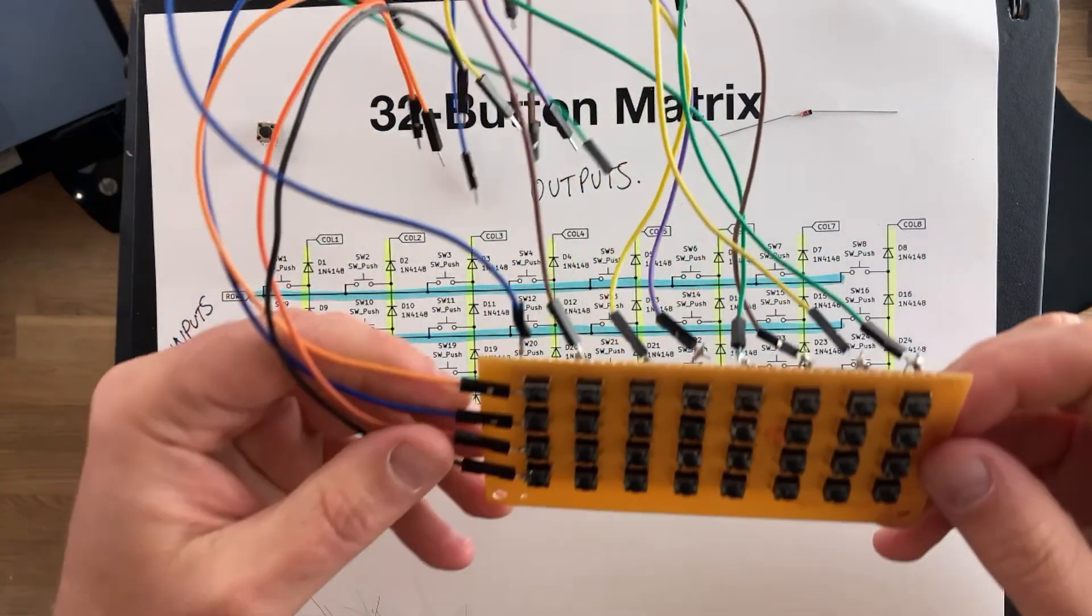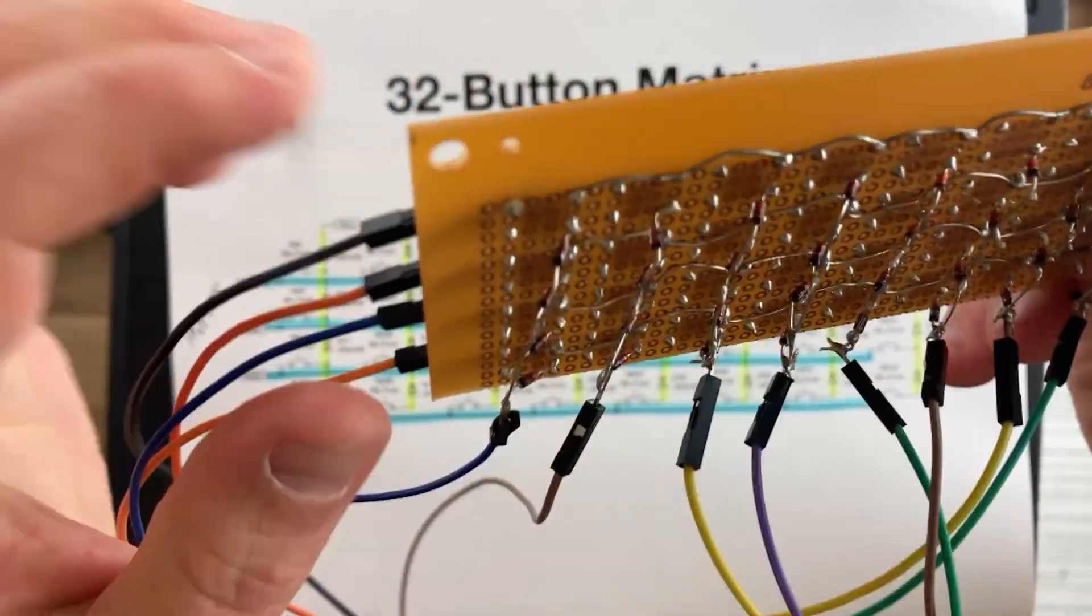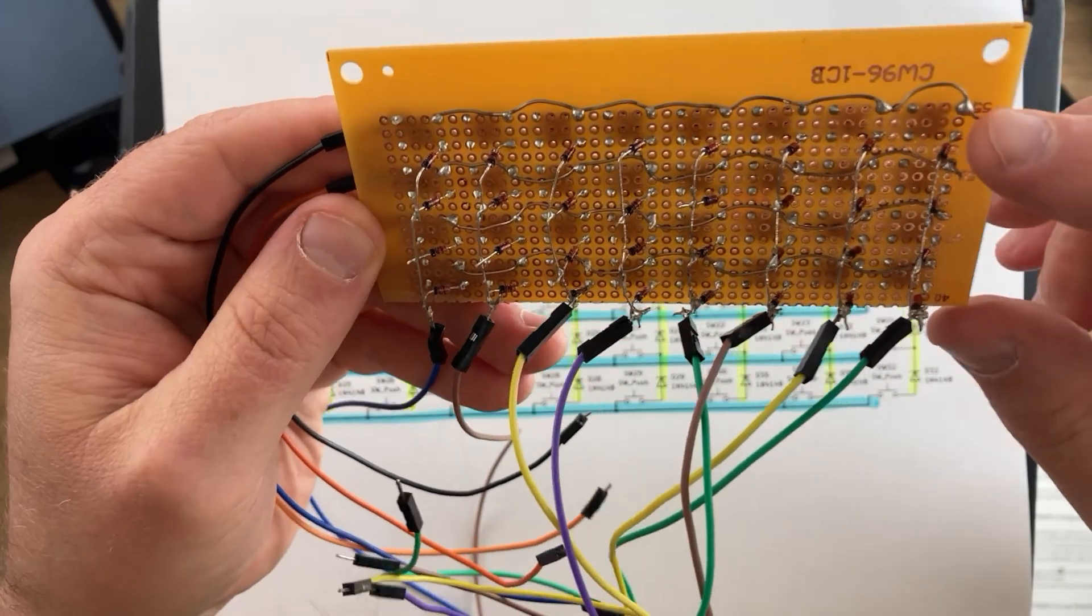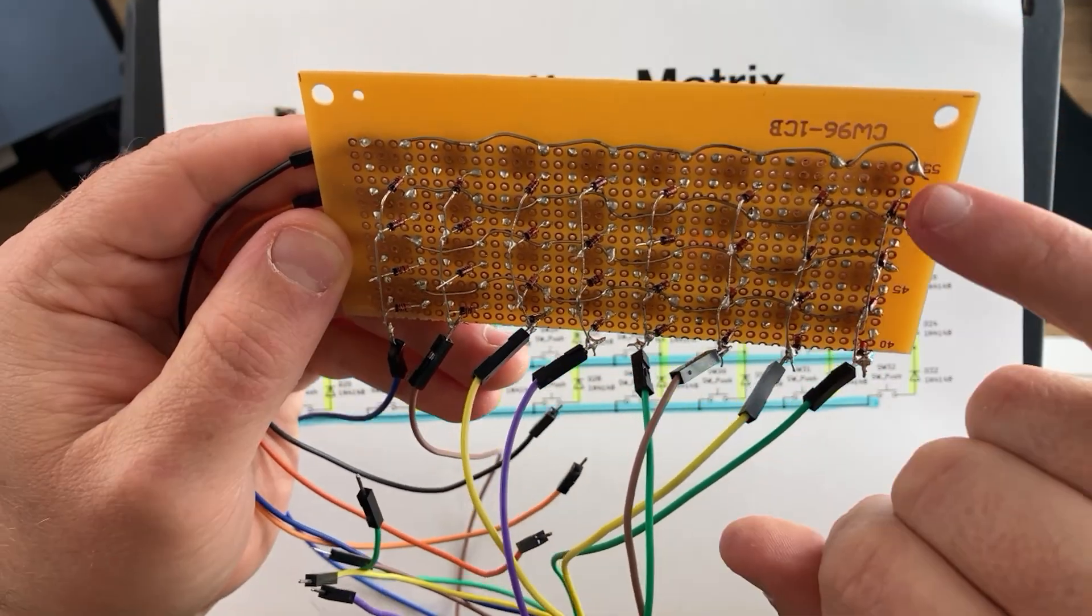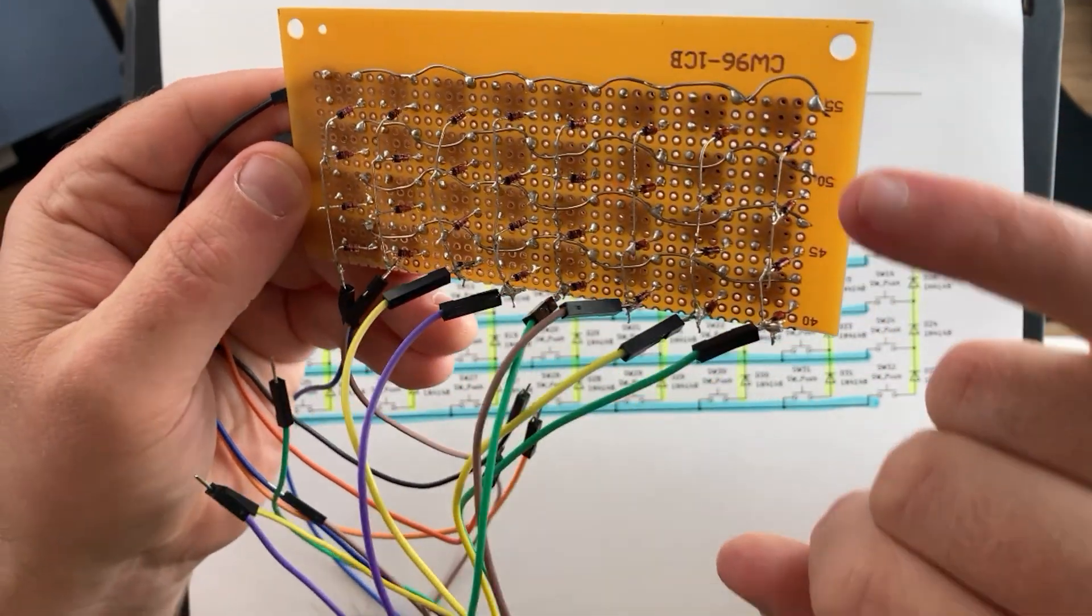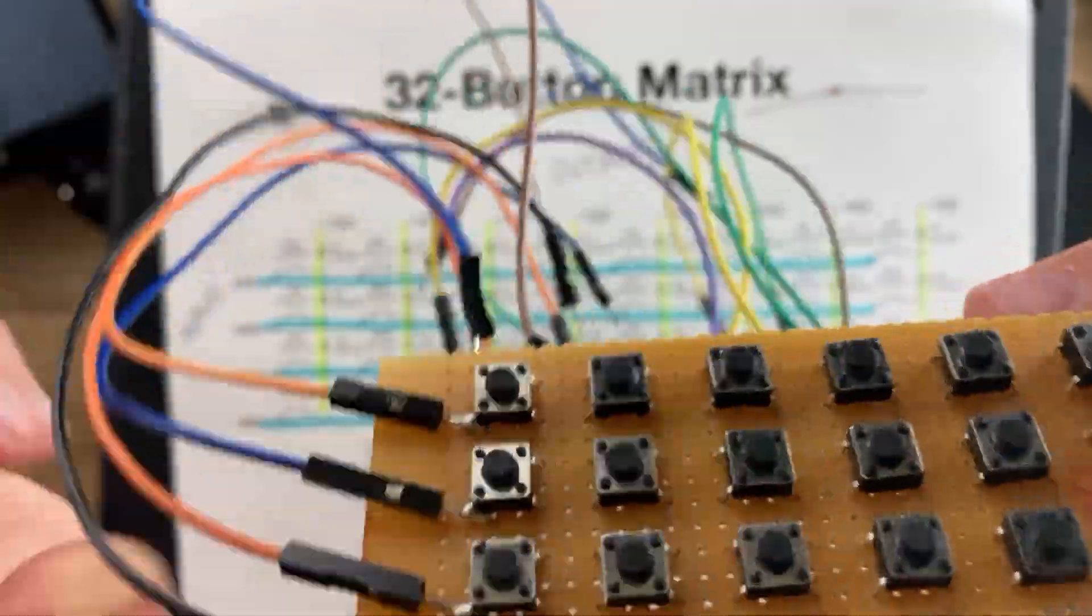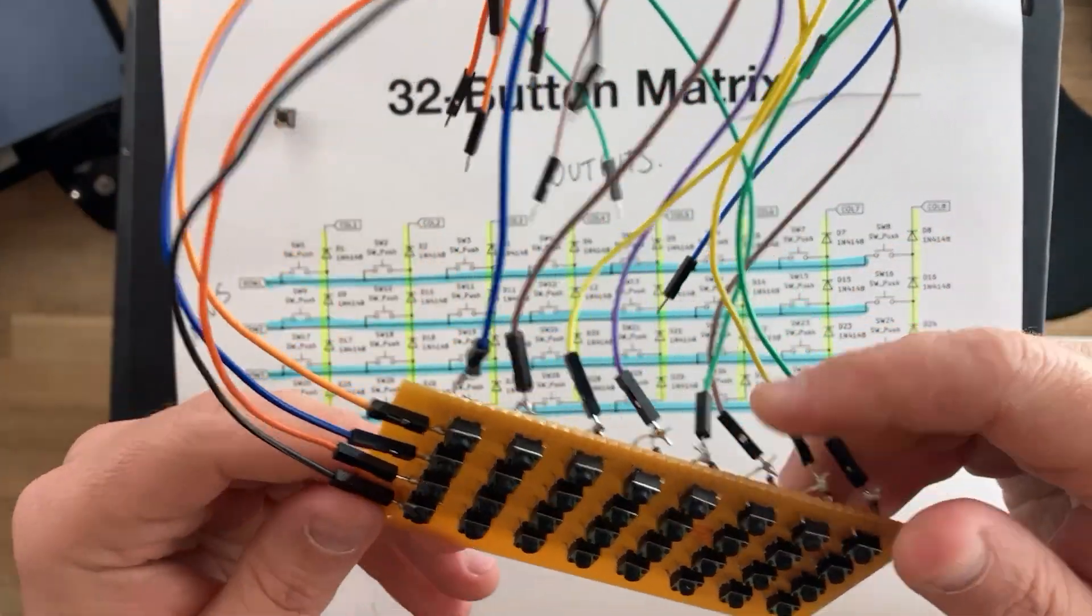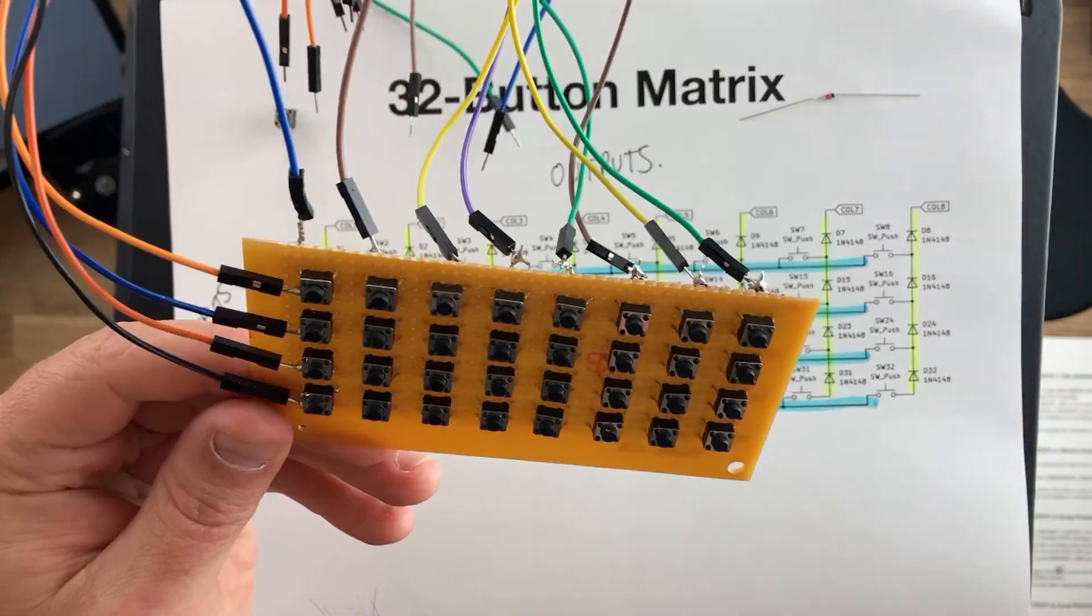All right, so here's the keypad that I've already built. As you can see, I've got one side of the button configured as our row soldered together with bare wire and then the other leg of the button is soldered to the diode and those diodes are all connected into a column. I've soldered just some breadboard jumpers to the end of each row in each column so I can easily hook it up to the ESP32.